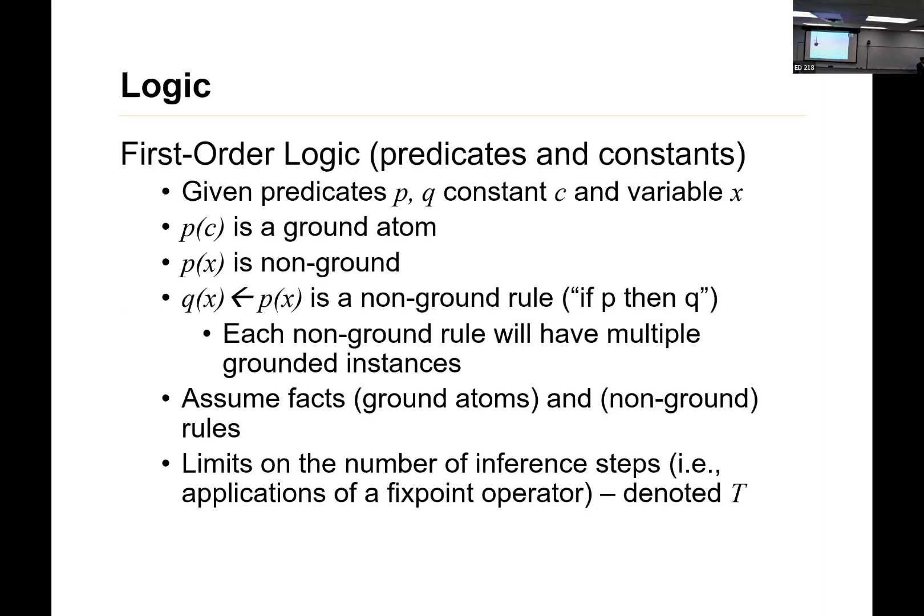A little bit of background in ILP. We're assuming a first-order logic. We have predicates, a set of constants, and a set of variable symbols. An atom formed with predicates and constants is ground, with variable symbols as non-ground. We have rules that are formed if p(x), then q(x), and that's an example of a non-ground rule.